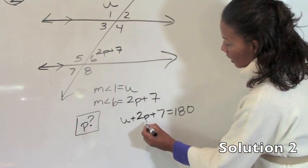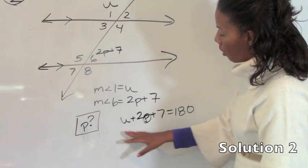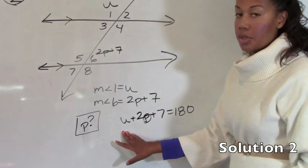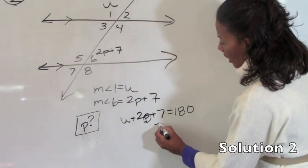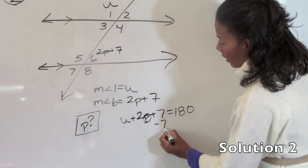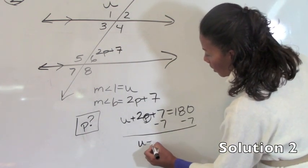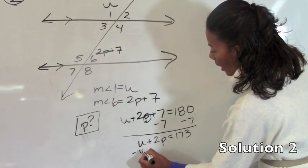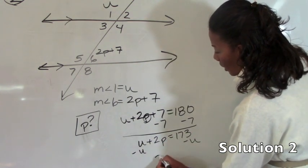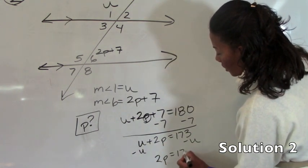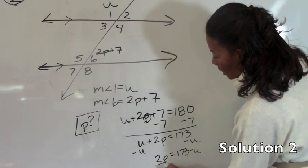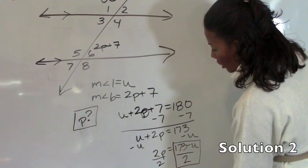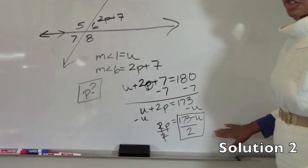So if we want to solve for p we need to get rid of the things that are added and multiplied onto the p. So the first things we're going to do is get rid of the 7 and get rid of the u because those are both added on. So if I subtract 7 from both sides I get u plus 2p equals 173, and then I need to subtract u from both sides. So I get 2p equals 173 minus u, and the final step is to divide both sides by 2. So you get 173 minus u divided by 2. And that answer is B.